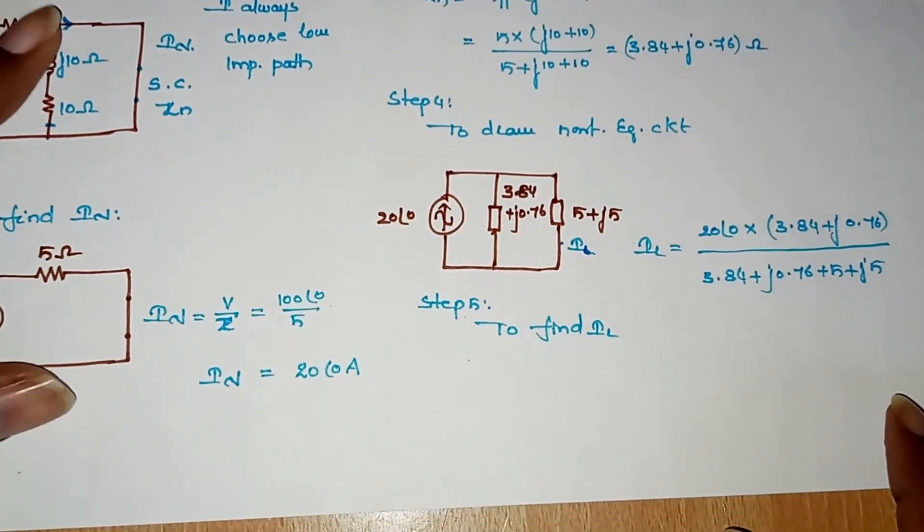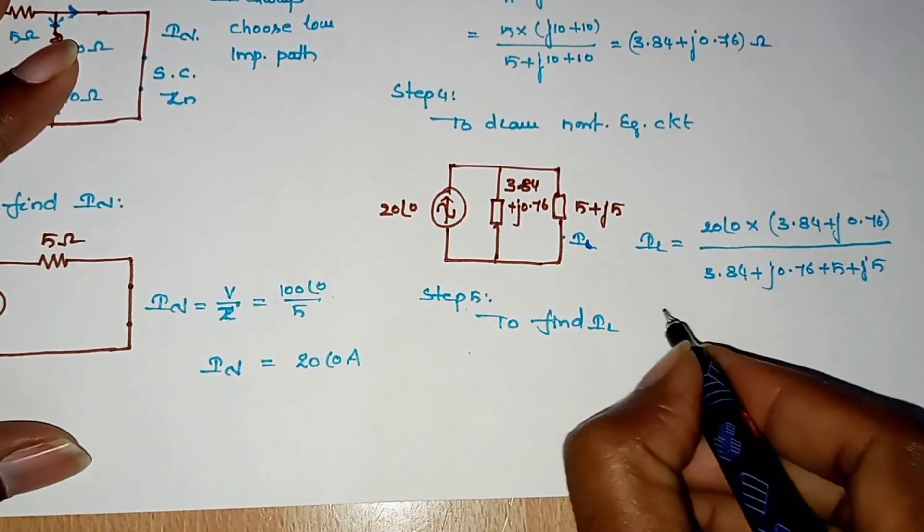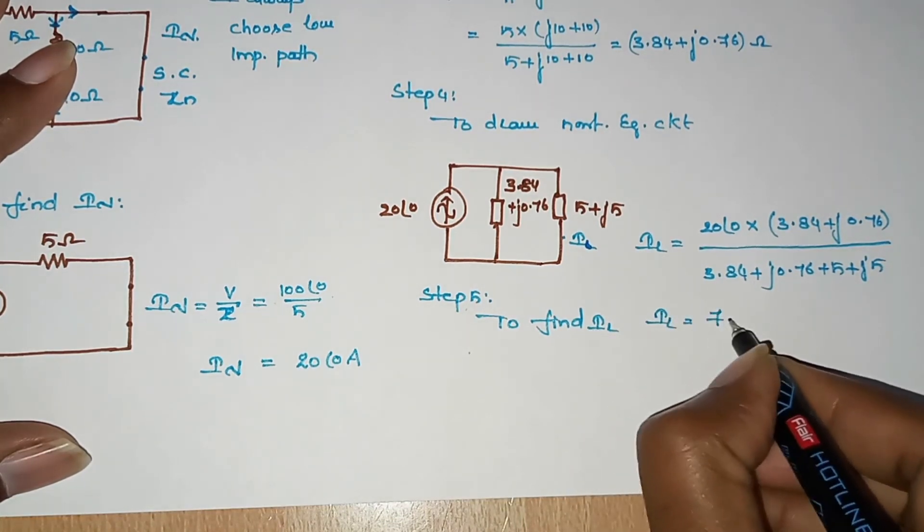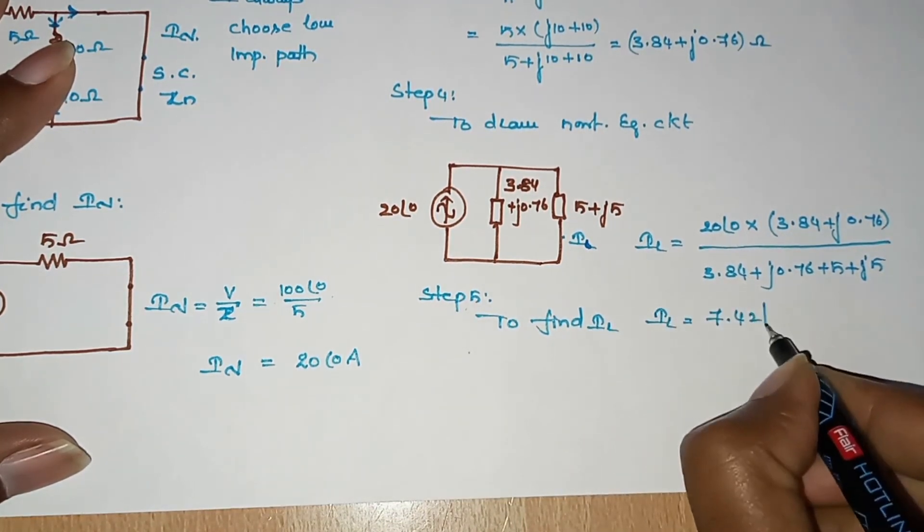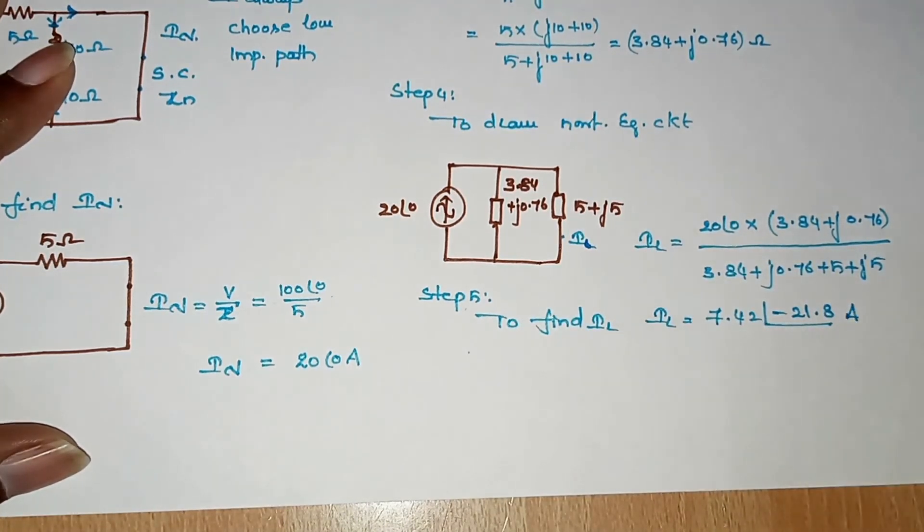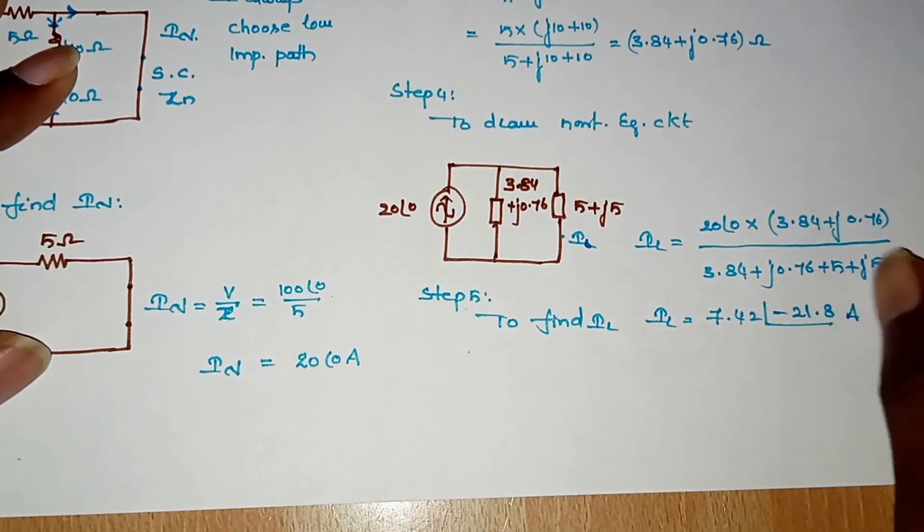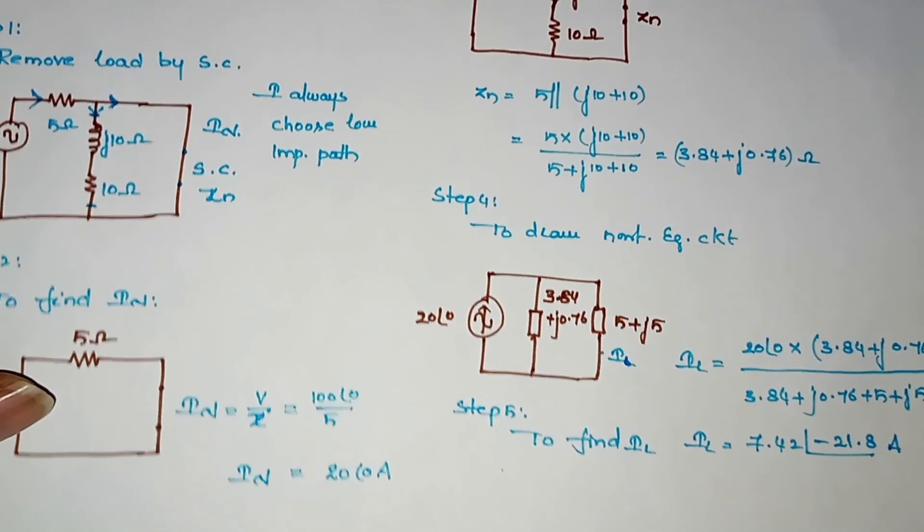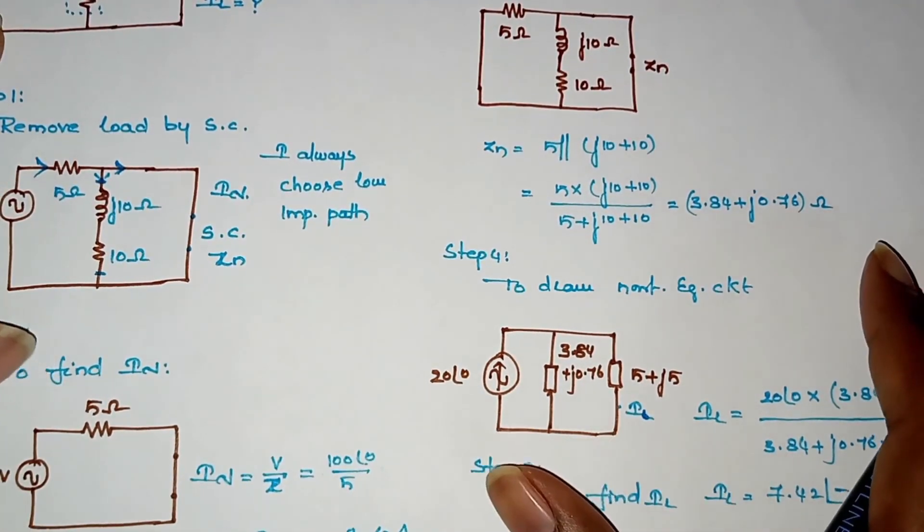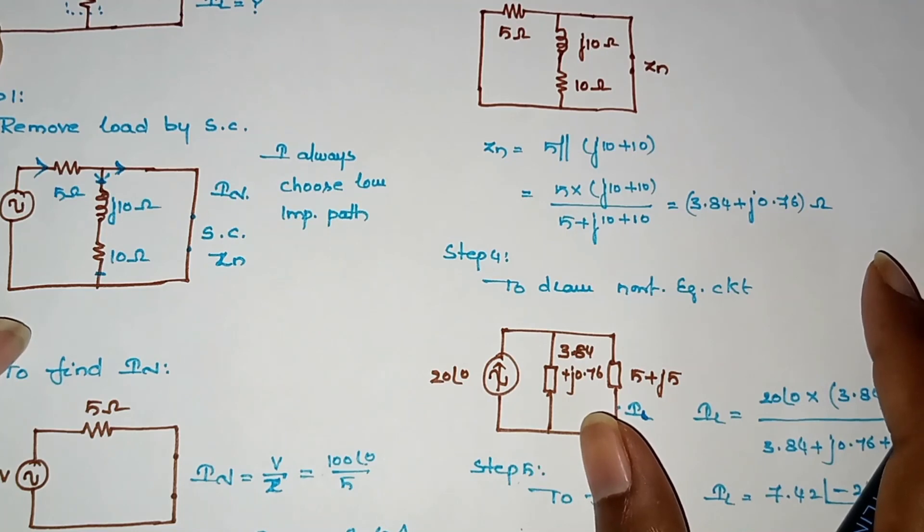These are our values. If we simplify our values, we get 7.42 at an angle minus 21.8 ampere. This is how we do it step by step. We remove the load and find the current. We use resistance values and impedance values. The steps are the same. OK friends, like and subscribe and share it.